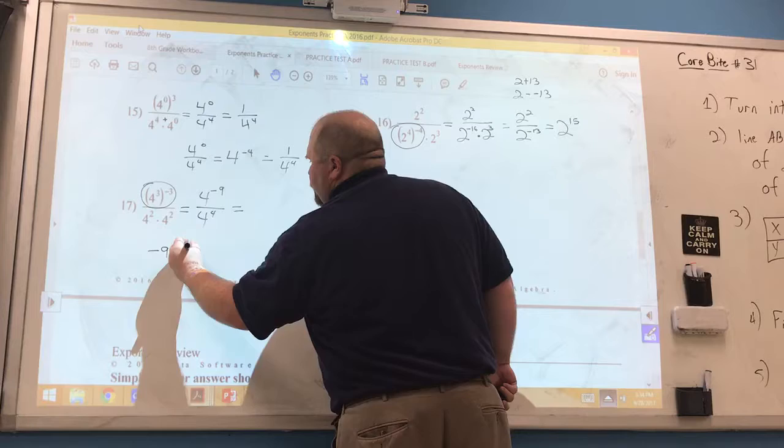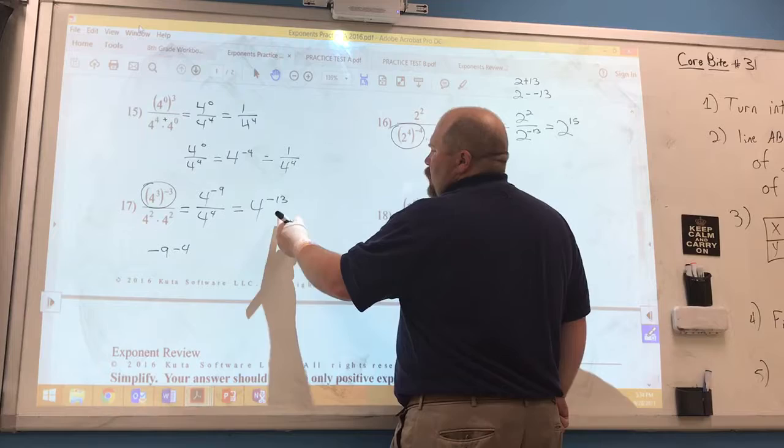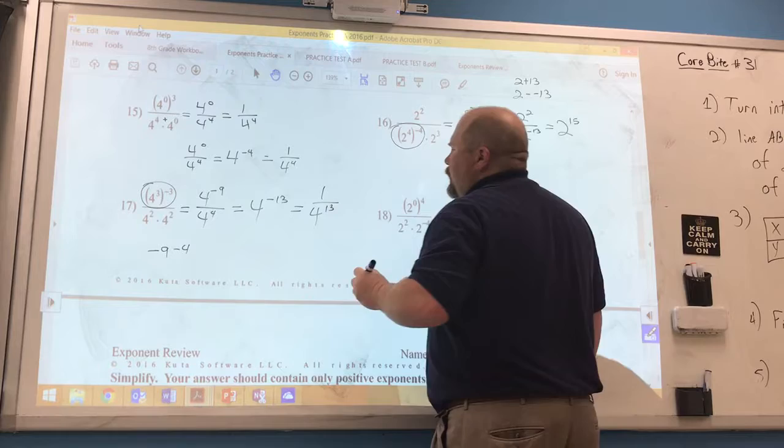So we're going to have 4 to the negative 13th power. We cannot leave it negative so we create a fraction out of it. We have 1 over 4 to the 13th power.